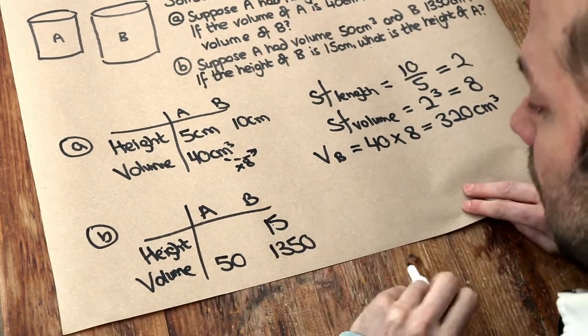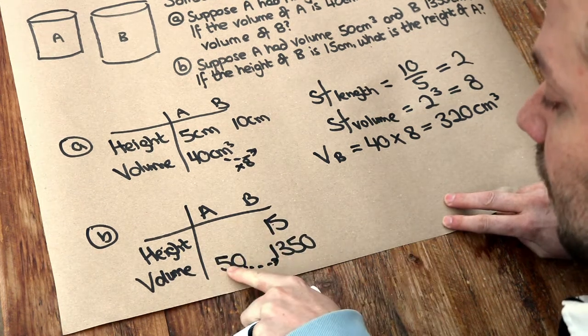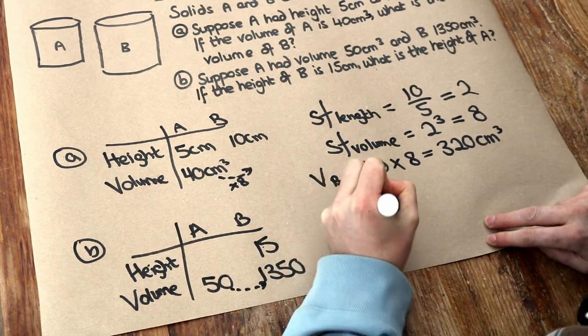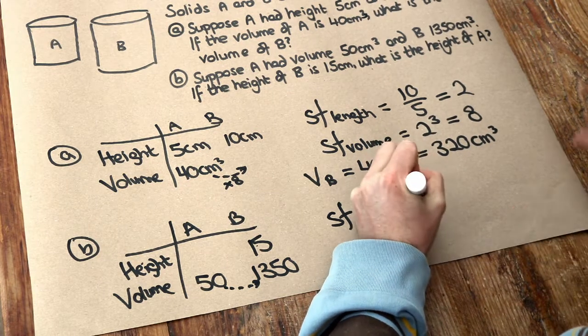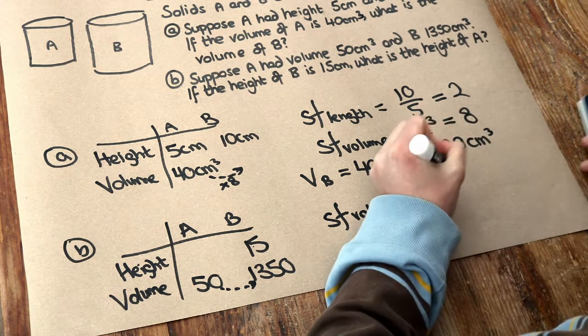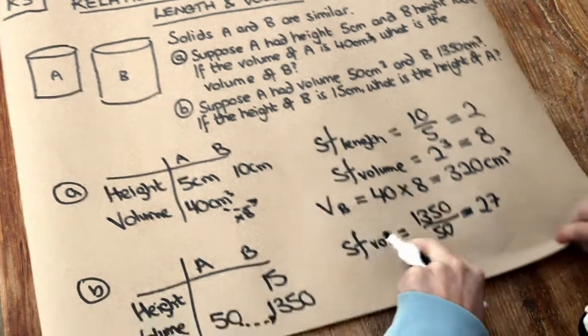Well, this time, because we've got both the volumes, we can find the scale factor of volume. So how many times big is this than this? Well, we can just do appropriate division. So the scale factor of volume is 1,350 divided by 50 to see how many times big it is. And if we do that, we get 27.